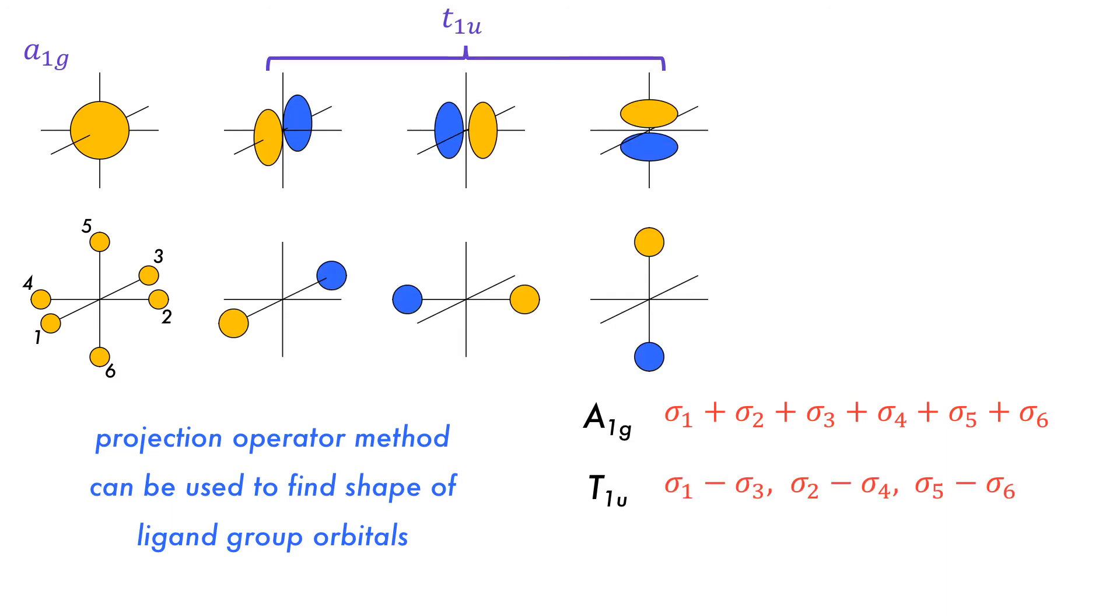The SALC for the t1u group orbital representation has sigma 1-3, 2-4, and 5-6, and this is to match the metal atoms px, py, and pz orbitals, meaning there can only be two ligands interacting with any one metal p orbital.